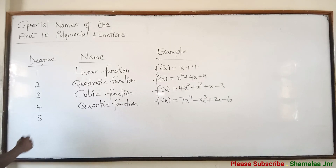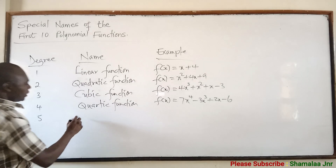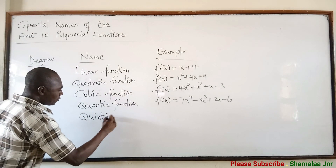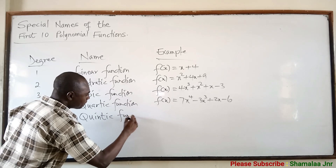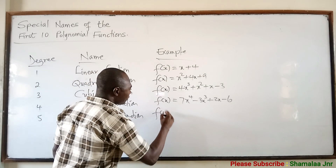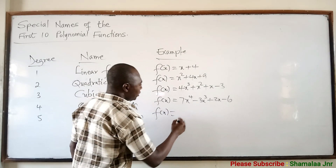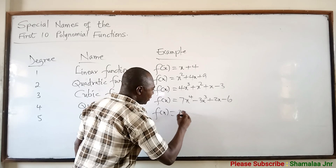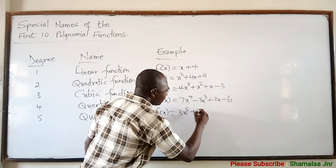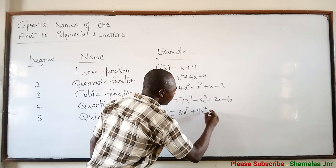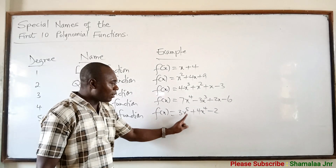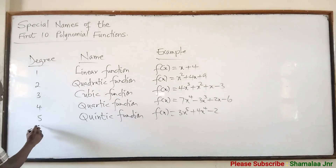And when the degree is 5, then you see that it is a quintic polynomial or quintic function. For example, L(x) = 3x⁵ + 4x⁴ − 2x + something — but the most important thing is that the highest power should be 5.